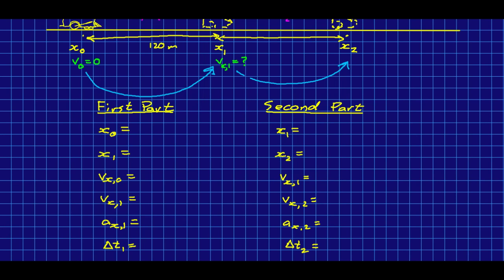So for our first part, the zeros are all our initials, and the ones are all our finals, and for the second part, the ones are our initials, and the twos are our finals. So I'm going to now pause it again, and you should fill in what you think all these values are, and I will do the same.